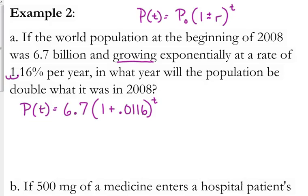Now, that's our model. The question is, in what year will the population be double where it was in 2008? Well, in 2008, it was 6.7 billion, double that is 13.4. So we set this equal to 13.4.